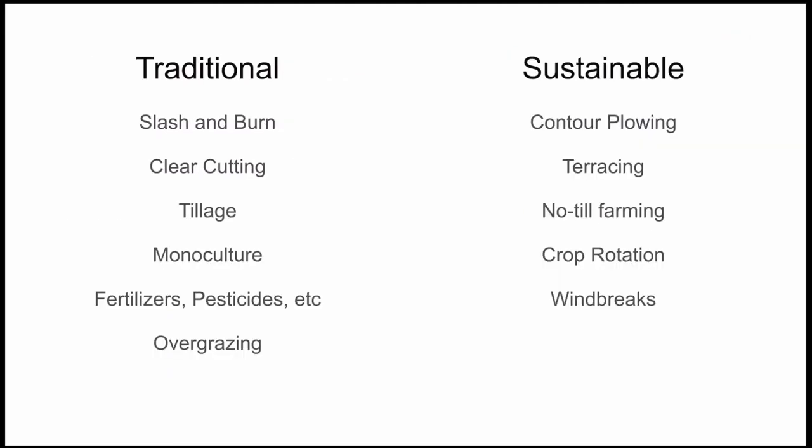Now that we know a bit about the basics of soil science, let's learn about some agricultural methods — specifically how traditional methods can lead to damage and soil loss, while more sustainable methods can help preserve the soil for future crops. Traditional methods include slash and burn, clear cutting, tillage, monoculture, and overusing fertilizers.